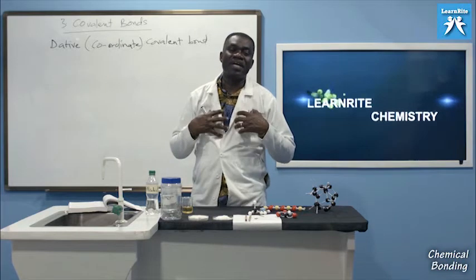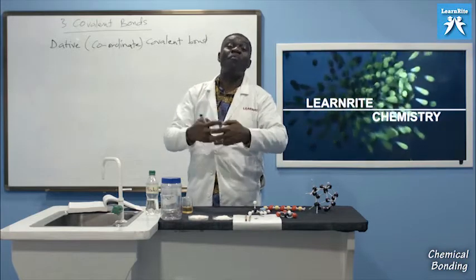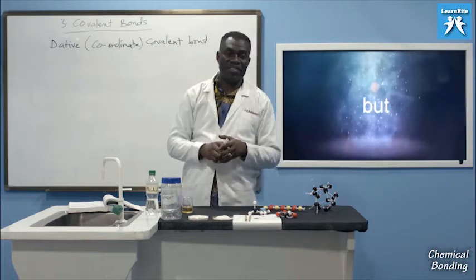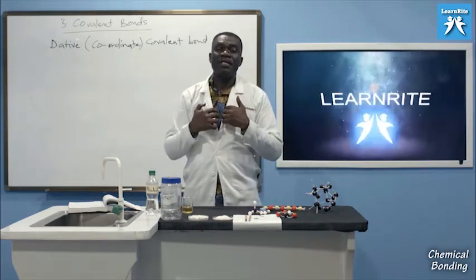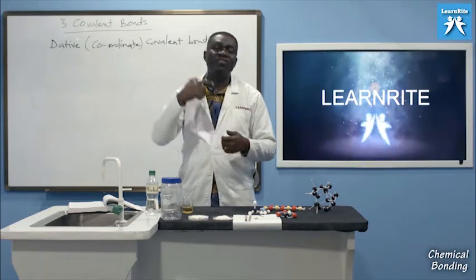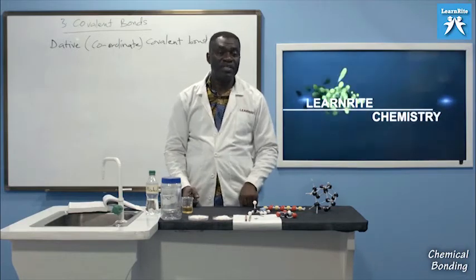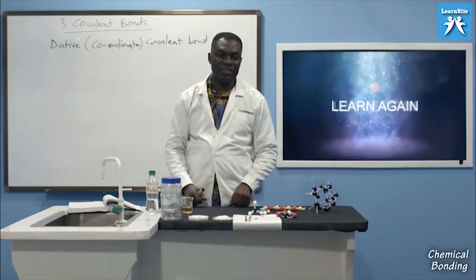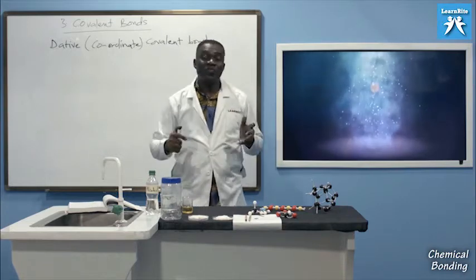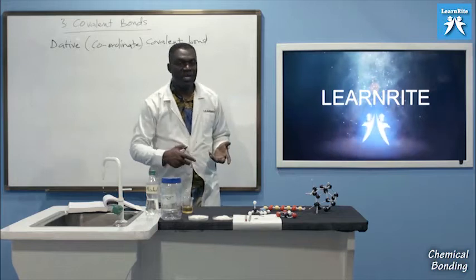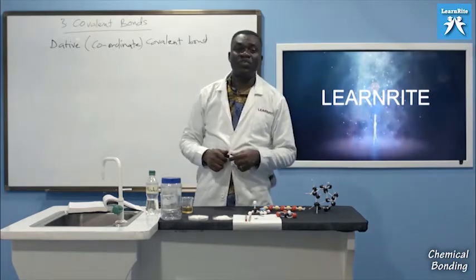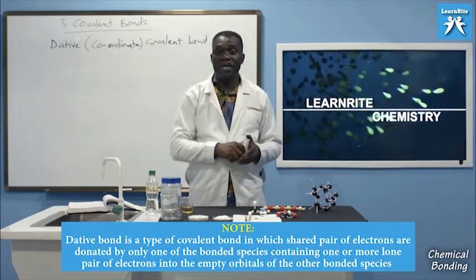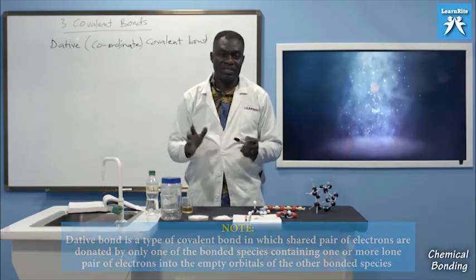A dative covalent bond is a bond in which the shared pair of electrons are donated by only one of the bonded species containing one or more lone pair electrons, into the empty orbitals of the other bonded species. Atom A donates the lone pair electrons into the empty orbital of atom B. After sharing, both atoms achieve their octet or duplet configuration. That is dative covalent bonding.